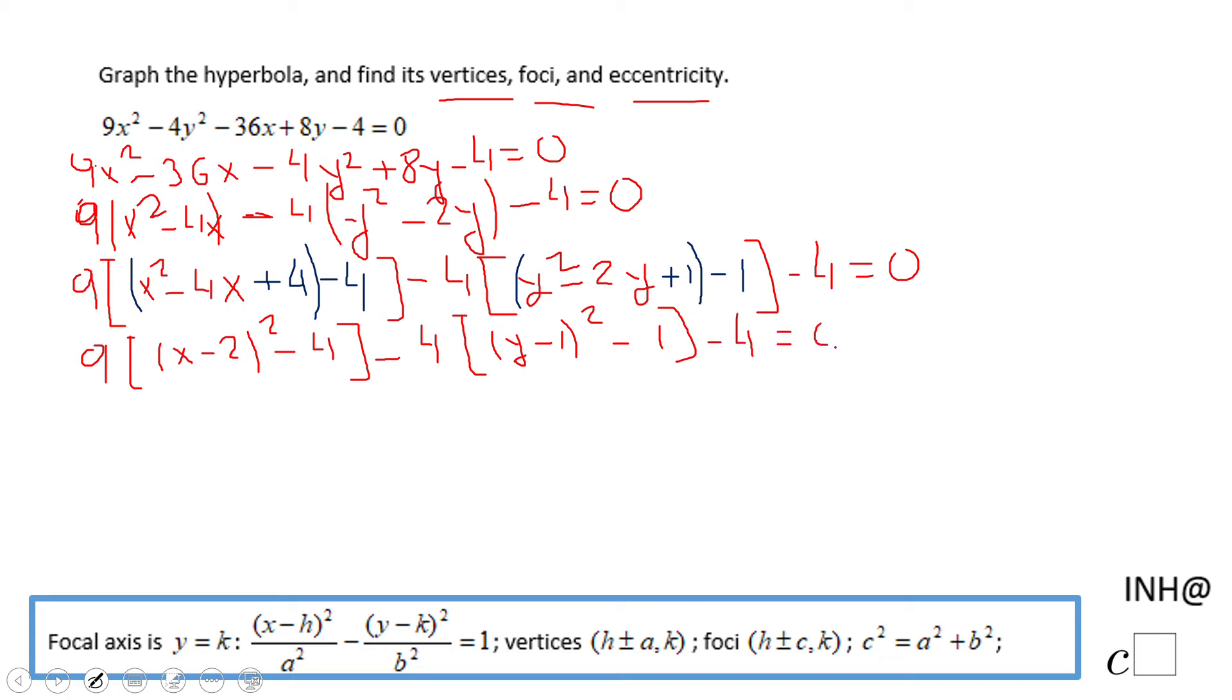Distributive property now, so we're going to have 9 times the quantity (x - 2)² minus 36. Be careful here, right? 9 times 4 is 36, minus 4 times the quantity (y - 1)². And again be careful here, plus 4, negative 4 times negative 1, plus 4, minus 4, equals 0.